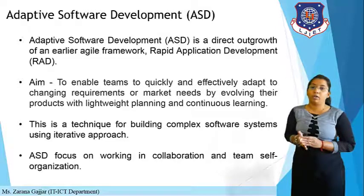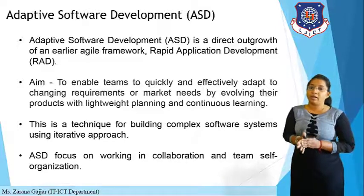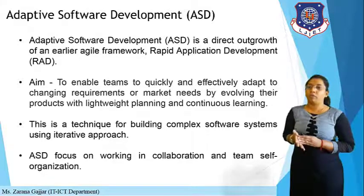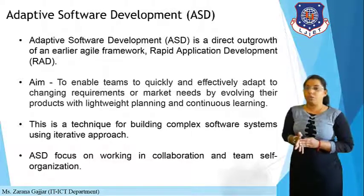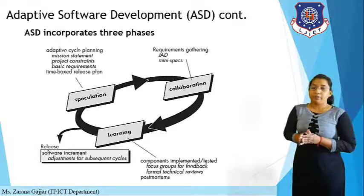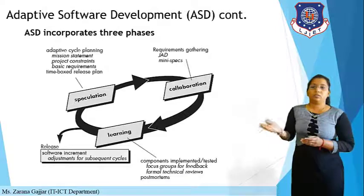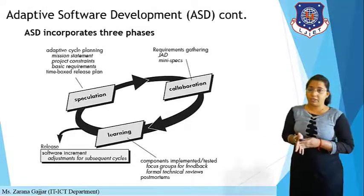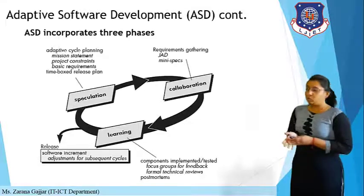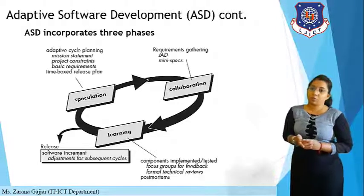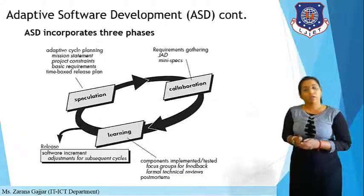ASD focuses on working in collaboration and team self-organization. If you have a large team and need to work collaboratively, then you can use the ASD model. ASD also has life cycle phases, categorized into three phases: first is Speculation, second is Collaboration, and third is Learning.